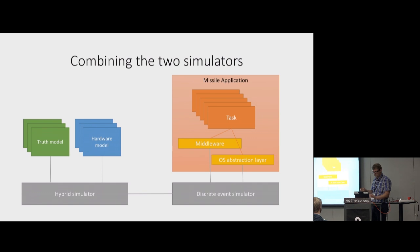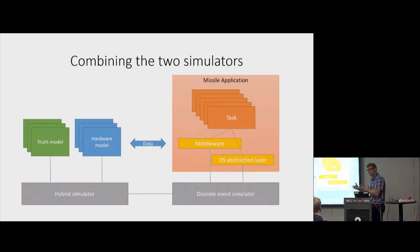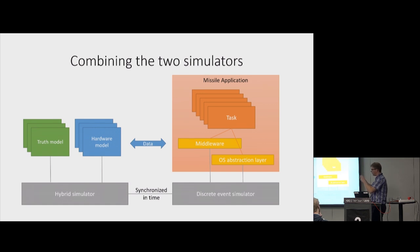The right-hand side — the discrete event simulator side — in my opinion was the most important part. If we take our simulator in total, the right-hand side is like two-thirds of it in terms of lines of code. But it doesn't work on its own. It has to work with the hybrid simulator too, where we put all our years of experience in actually modeling missile hardware and environment. There's an exchange of data and, more importantly, these two simulators are synchronized in time — they sort of step up one after the other.